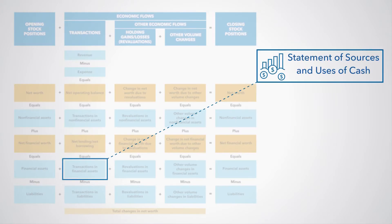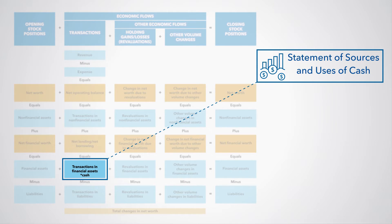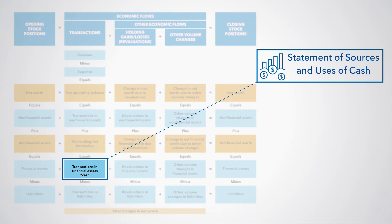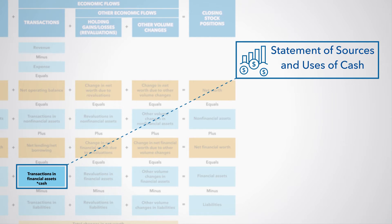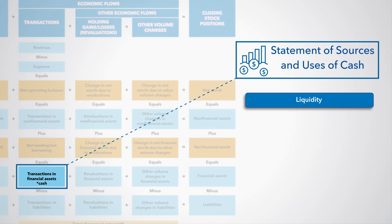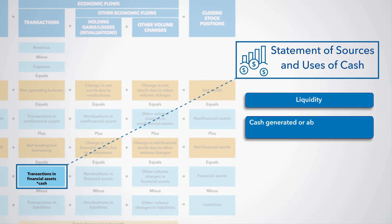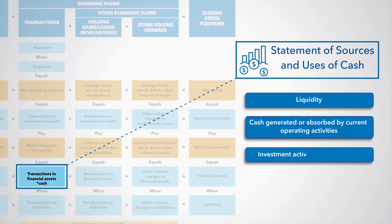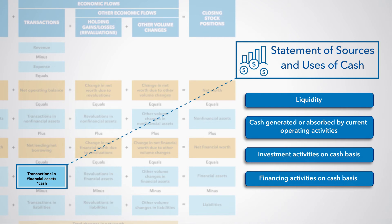The fourth core statement is the statement of sources and uses of cash, or the cash flow statement. This statement is important for assessing government or a public corporation's liquidity. It shows the total amount of cash generated or absorbed by current operating activities, transactions in non-financial assets — that is, investment activities on a cash basis — and financing activities on a cash basis, that is, cash transactions involving financial assets and liabilities, other than the financial asset in the form of currency and deposits itself.